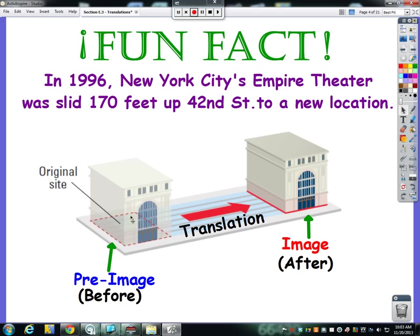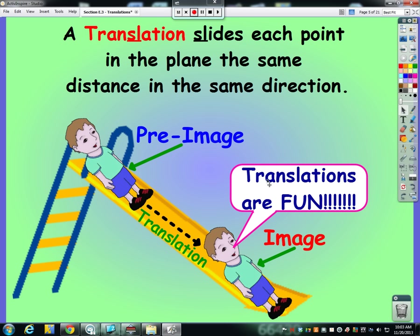So before we move, there again is our pre-image. After the building moved, there is our image, and the sliding is our transformation, which specifically is our translation.